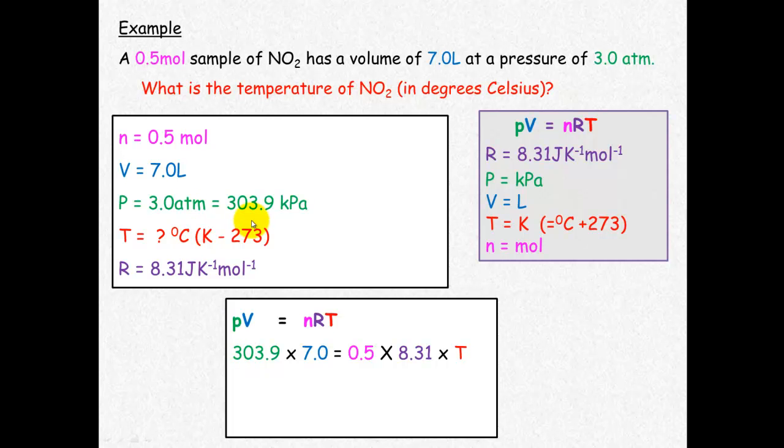P is 303.9 kilopascals, V is 7 liters, n is 0.5 moles, R is 8.31, and we're solving for T.